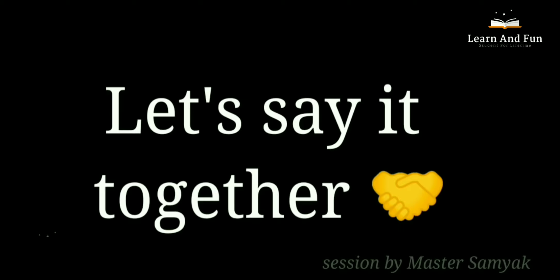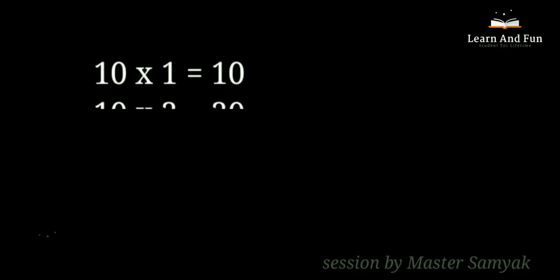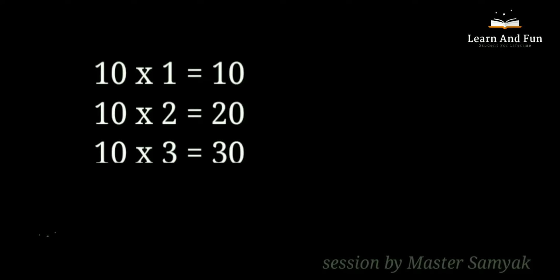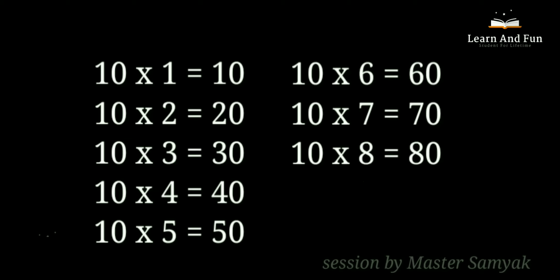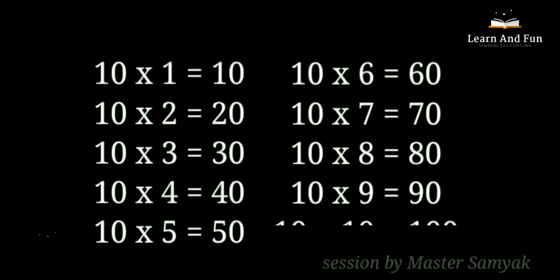Let's say it together. 10 ones are 10. 10 twos are 20. 10 threes are 30. 10 fours are 40. 10 fives are 50. 10 sixes are 60. 10 sevens are 70. 10 eights are 80. 10 nines are 90. 10 tens are 100.